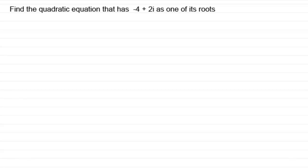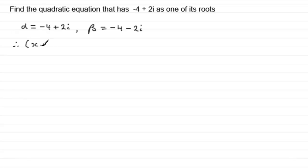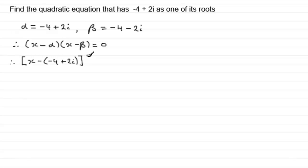Well let's see how you got on. Again, if we know that one of the roots — let's say alpha — is minus 4 plus 2i, then we know the other root, beta, must be the complex conjugate of this, which is minus 4 minus 2i. We know therefore that x minus alpha multiplied by x minus beta equals 0. So we can now write these values in: x minus (minus 4 plus 2i) multiplied by x minus (minus 4 minus 2i) equals 0.